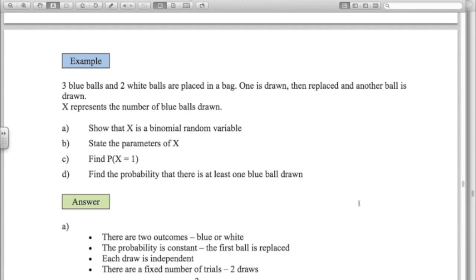We could say blue or not blue, because our random variable here is about the number of blue balls drawn. The probability is always constant, because we're replacing the ball each time. So the probability of getting a blue ball on any draw is three out of five. Each draw is independent of the other. One draw doesn't influence the outcome of another one. And there's a fixed number of trials here. Two draws.